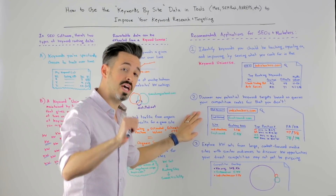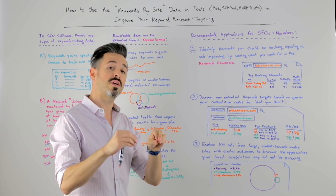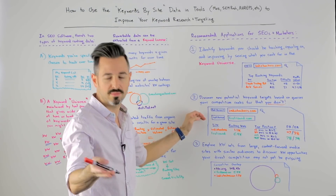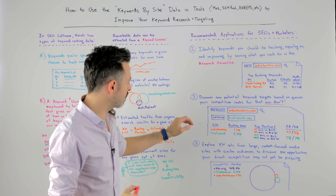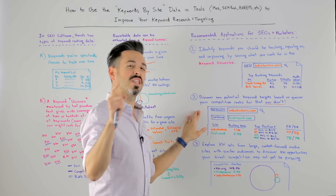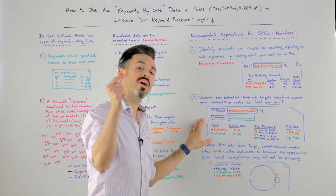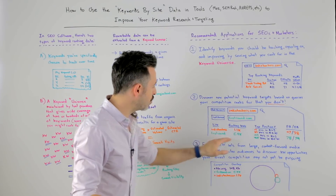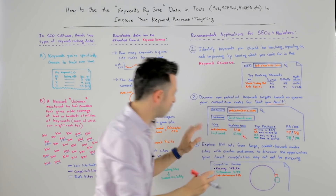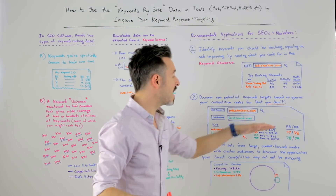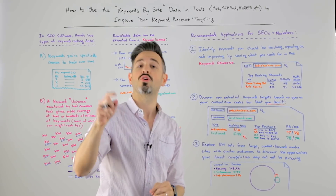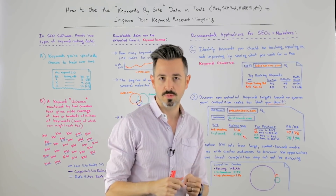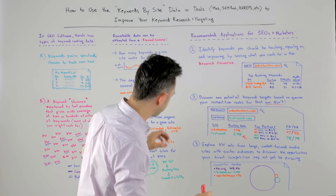Second, you can discover new potential keyword targets when doing keyword research based on queries your competition ranks for that you don't. In this case, I might plug in First Round Capital, which has a great content play they've been doing for many years. An indie hacker might say, there's a lot of stuff that startups and tech founders are interested in that First Round writes about — let me see what keywords they're ranking for that I'm not. You'd plug those two sites into Moz's tool or others and see, they're ranking for about 4,500 more keywords than I am. Then you get that full list, sort by volume and difficulty, and go to work.